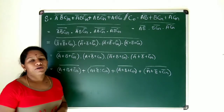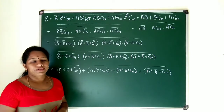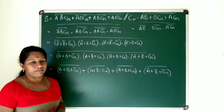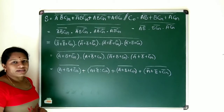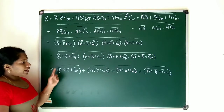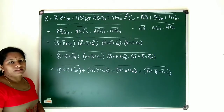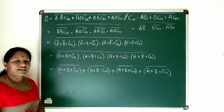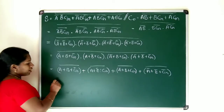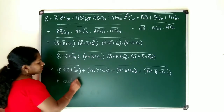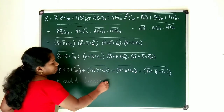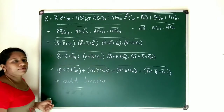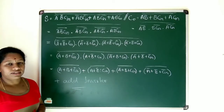This we are doing by De Morgan's theorem — product of whole complement will be equal to sum of individual complements. So, now I can construct this by using NOR gates. And one more thing is, I am missing the whole complement here. So, for that, I need to add an inverter at the end. Let's finish the sum expression simplification and move to the carry-out expression.